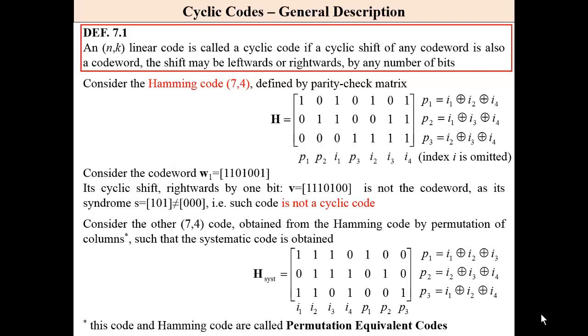An (n,k) linear code is called a cyclic code if a cyclic shift of any codeword is also a codeword. The shift may be leftwards or rightwards by any number of bits. Consider Hamming code (7,4), defined by the parity check matrix.